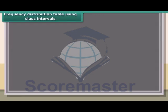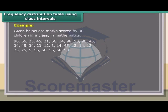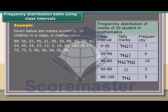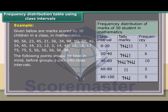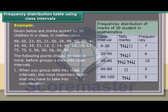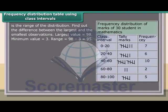Frequency distribution table using class intervals. Example: given below are marks scored by 30 children in a class in mathematics. Before grouping data into class intervals, find out the difference between the largest and the smallest observations. The largest value is equal to 98, the minimum value is 3, so the range is 98 minus 3, which equals 95.